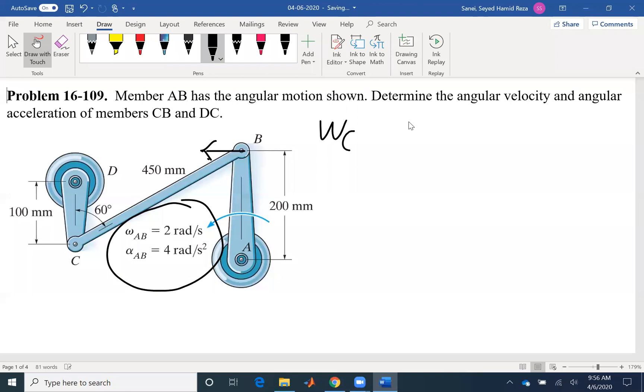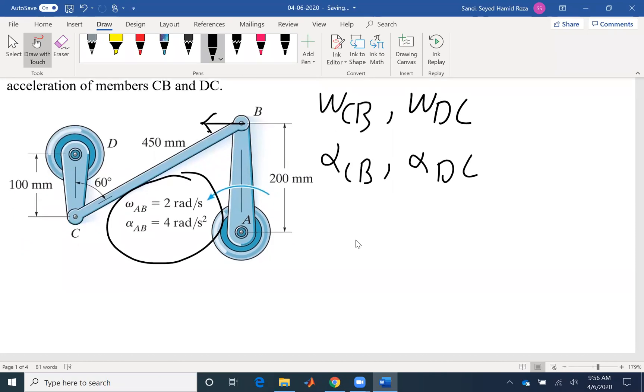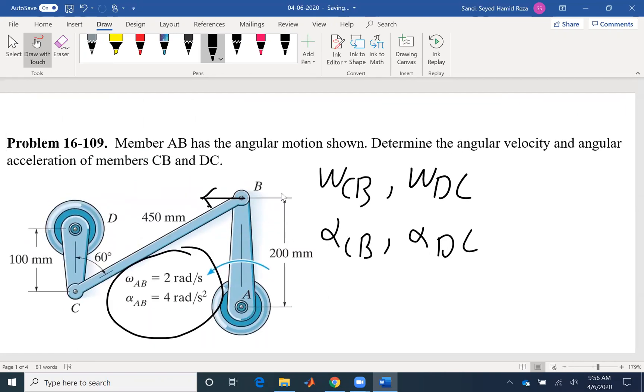So the problem is asking for omega CB, omega DC, alpha CB, as well as alpha DC. Looking at the problem, we can see by visual inspection that the velocity at B has to be in the negative direction of i if this is our coordinate system, x and y.